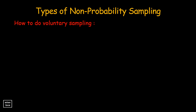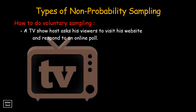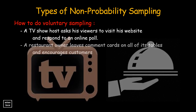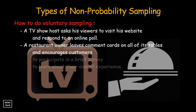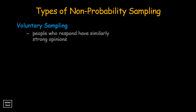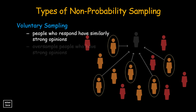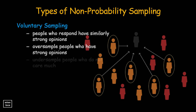More examples of voluntary sampling: a TV show host asks his viewers to visit his website and respond to an online poll. A restaurant owner leaves comment cards on all tables and encourages customers to participate in a brief survey about their overall experience. Voluntary sampling includes people who take the time to respond, but they tend to have similarly strong opinions compared to the rest of the population. Often, voluntary response samples over-sample people who have strong opinions and under-sample people who don't care much about the topic of the survey.